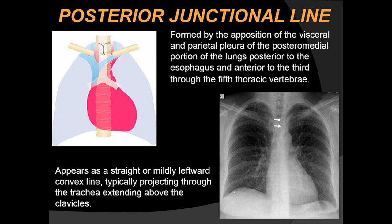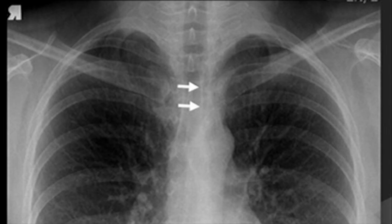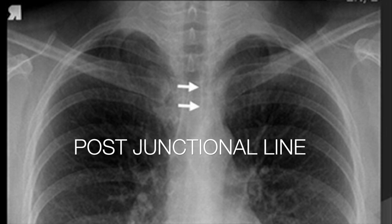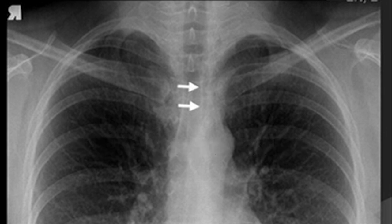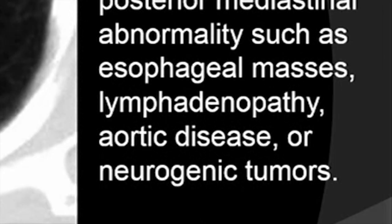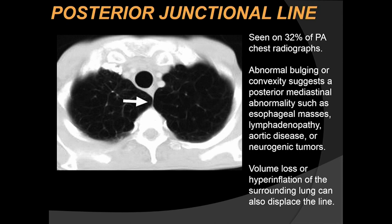The posterior junctional line is formed by the apposition of the visceral and parietal pleura of the posterior medial portions of the lungs, posterior to the esophagus and anterior to the third to fifth thoracic vertebrae. It appears as a straight or slightly leftward convex line projecting through the trachea and extending above the clavicles — important to differentiate from the anterior junctional line, which is below the level of the clavicles. Seen in about 30% of radiographs, any abnormal bulge or convexity suggests posterior mediastinal abnormality.